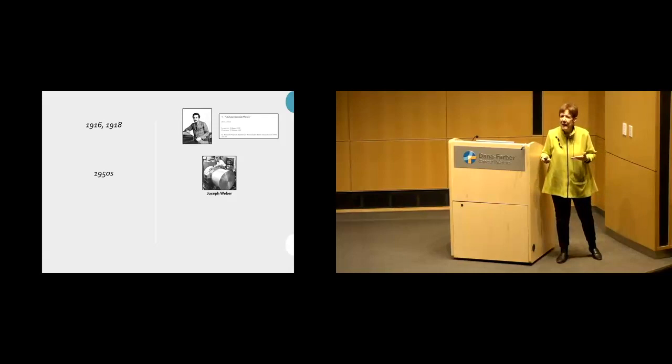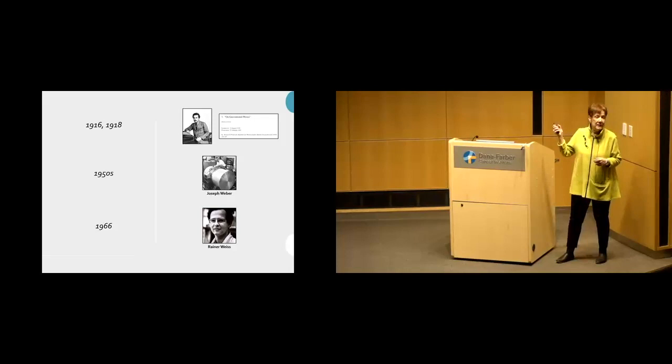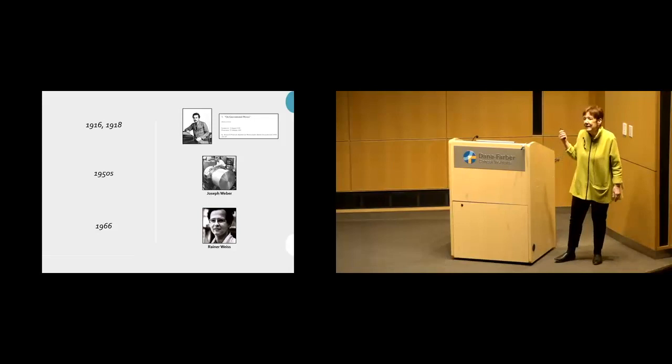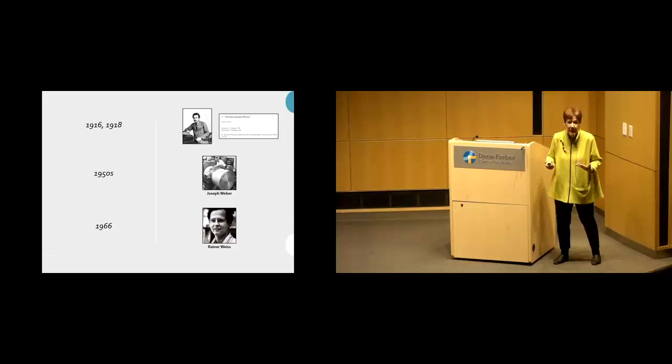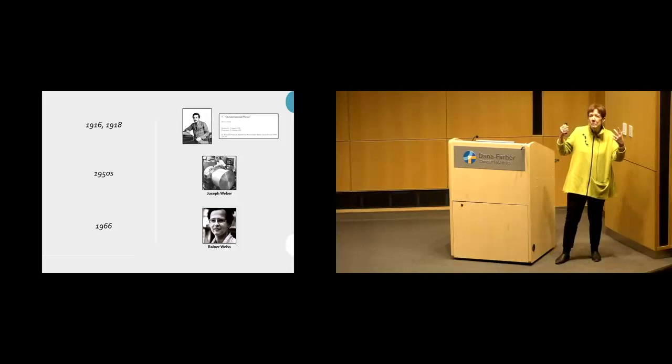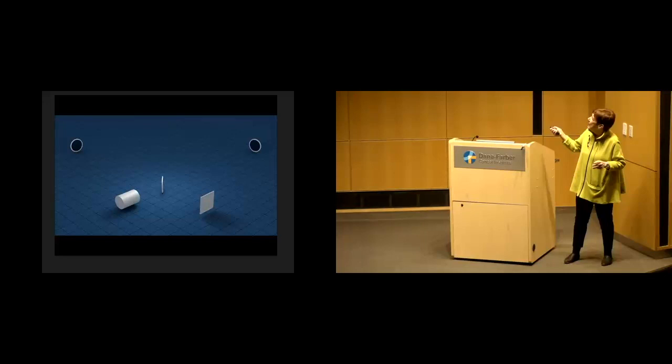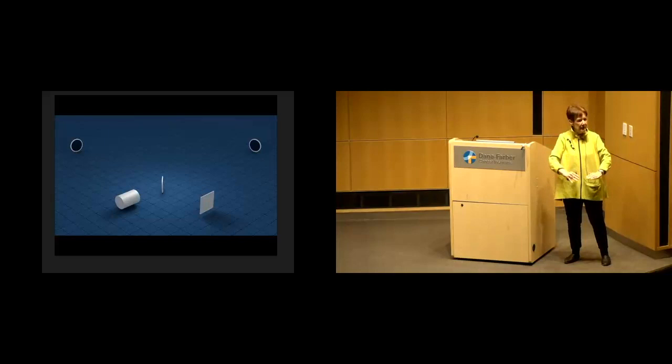And that included Rainier Weiss, known as Ray Weiss, at MIT. He was a young professor in 1966, starting his career there. And he was asked to teach the first course at MIT ever on general relativity. Well, Ray is an experimentalist, not a theorist. He told me, he said, I'm just one step ahead of my students. So in thinking of homework problems, he thought in terms of visuals, images, and he set up a homework problem. He asked his students, I have these three masses.